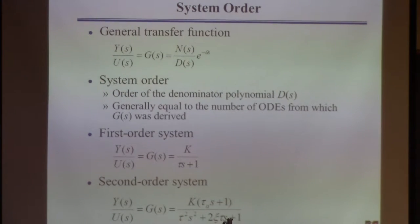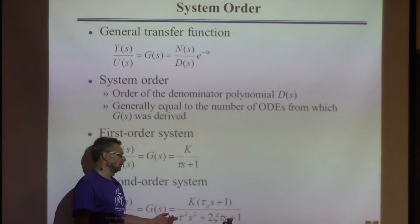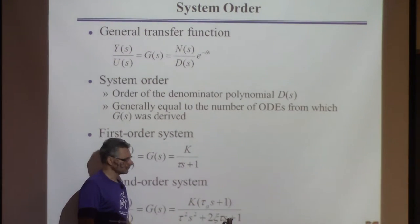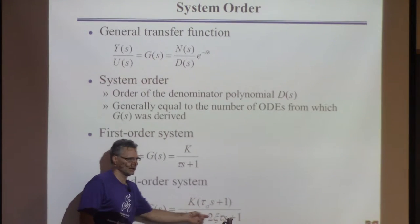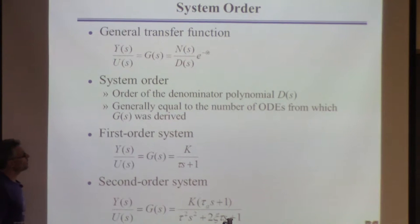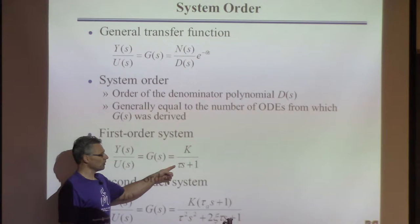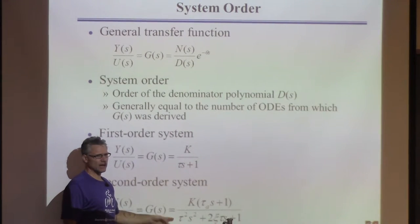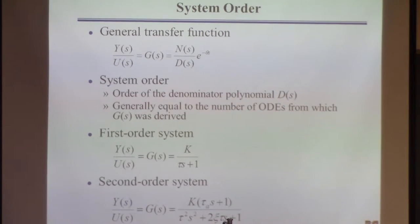The next level of complexity is a second-order system. It has a transfer function that is first-order in the numerator and second-order in the denominator. The order of the system is the order of the denominator polynomial in s. The first-order came from a single first-order differential equation; the second-order came from two coupled first-order differential equations.